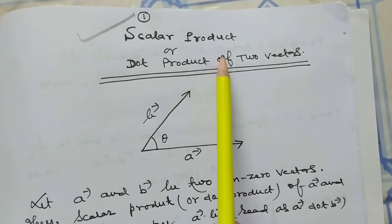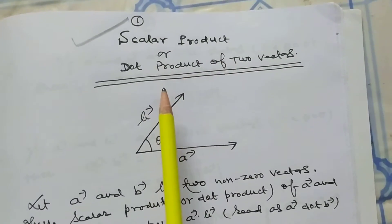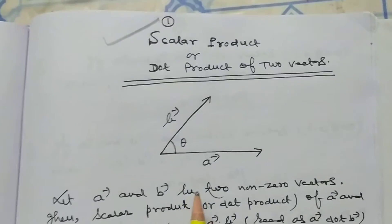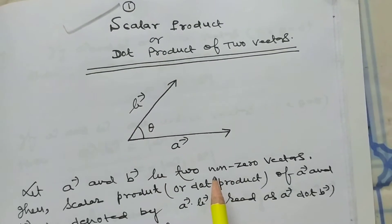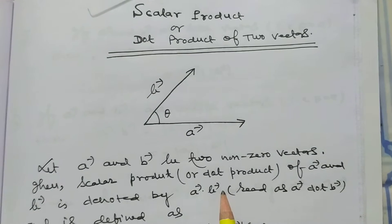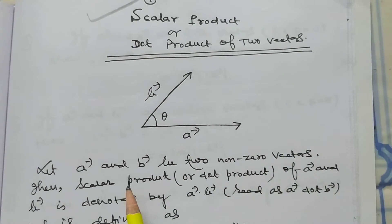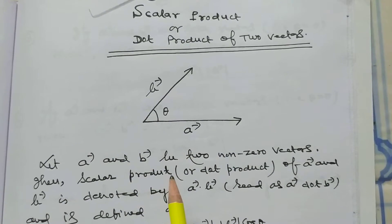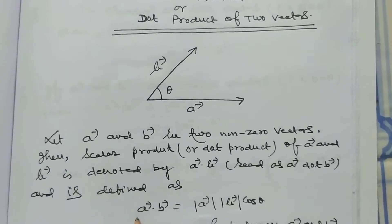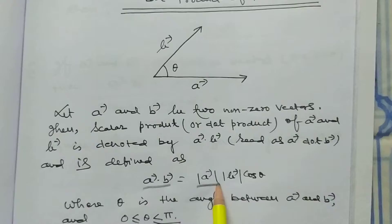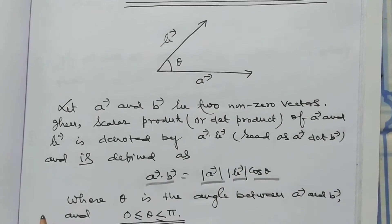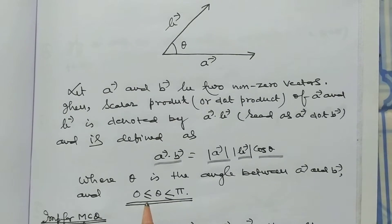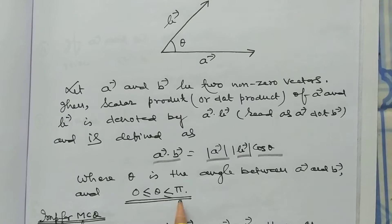My dear student, today I want to discuss scalar product or dot product of two vectors. Suppose A and B be two vectors and they make an angle theta. Then the dot product or scalar product of two vectors is: vector A dot vector B is equal to magnitude of A times magnitude of B times cos theta, where theta is the angle between vector A and B, and 0 ≤ theta ≤ pi.